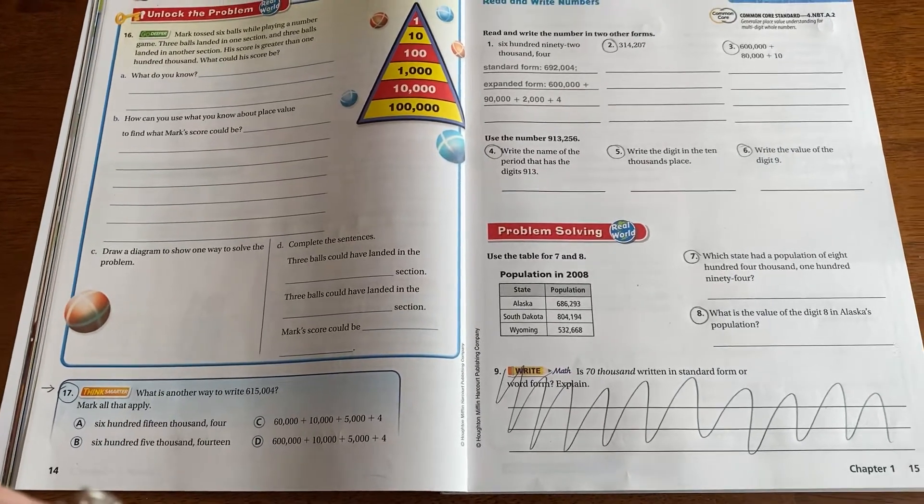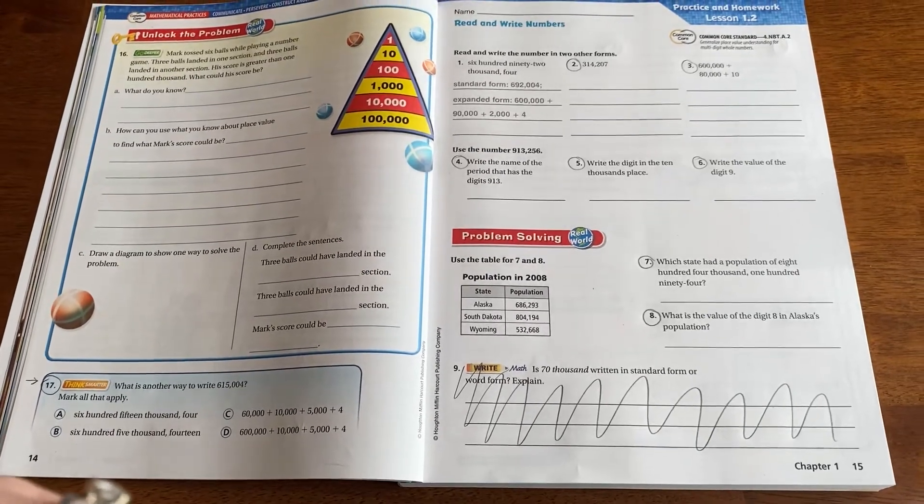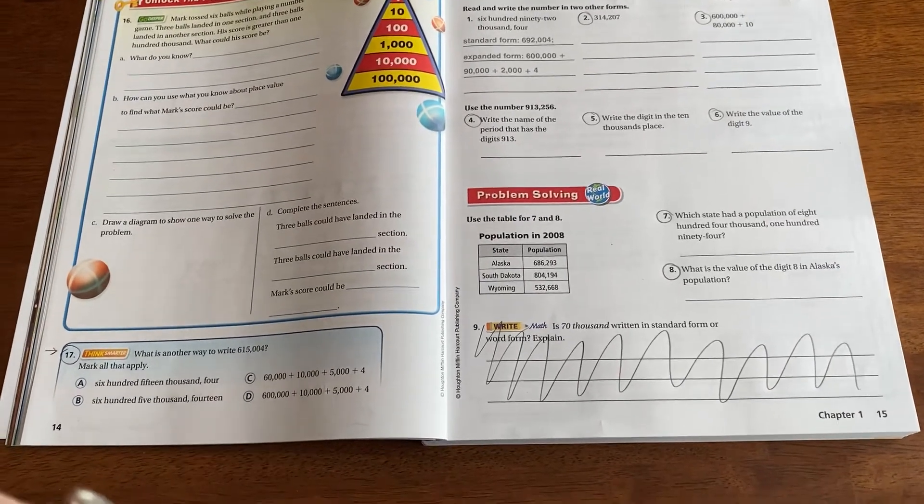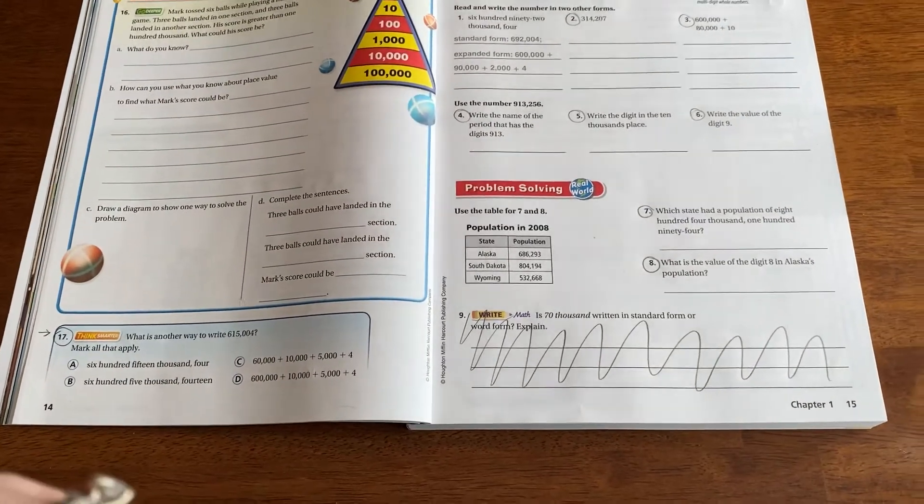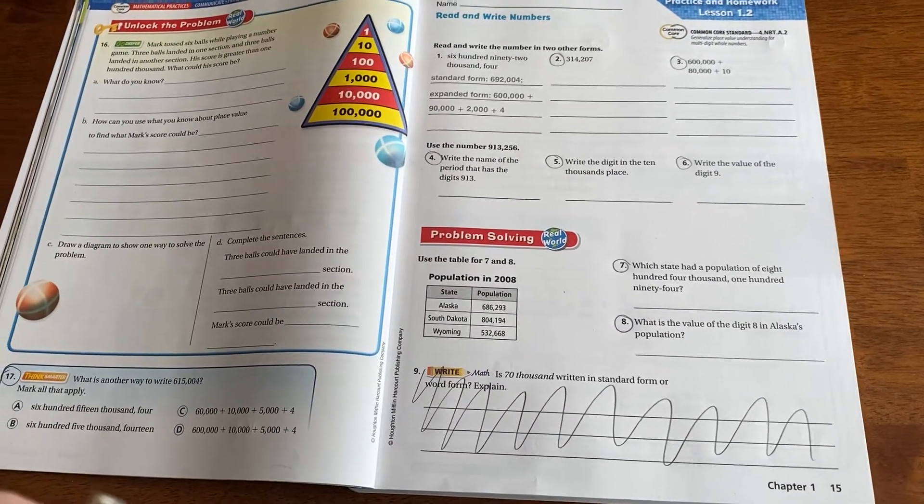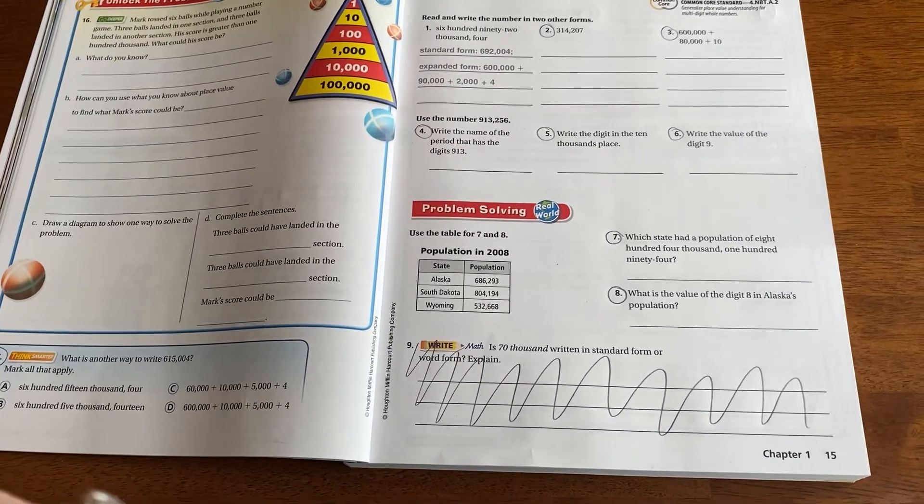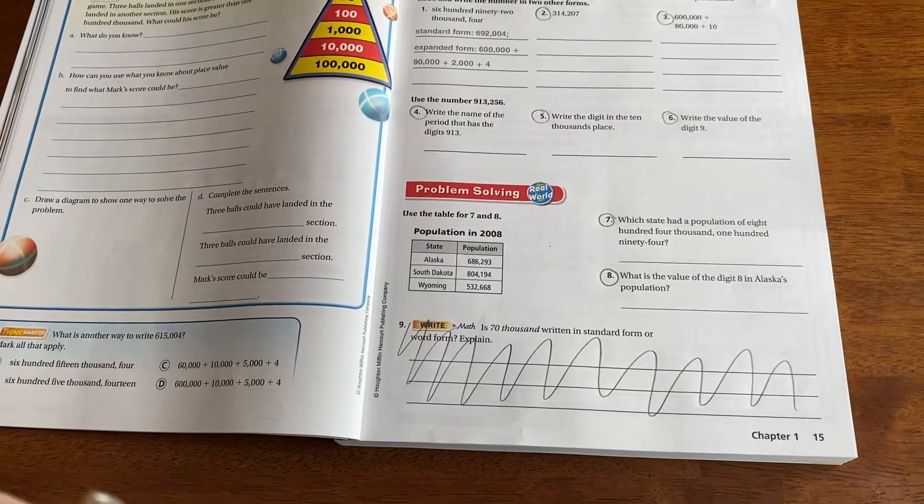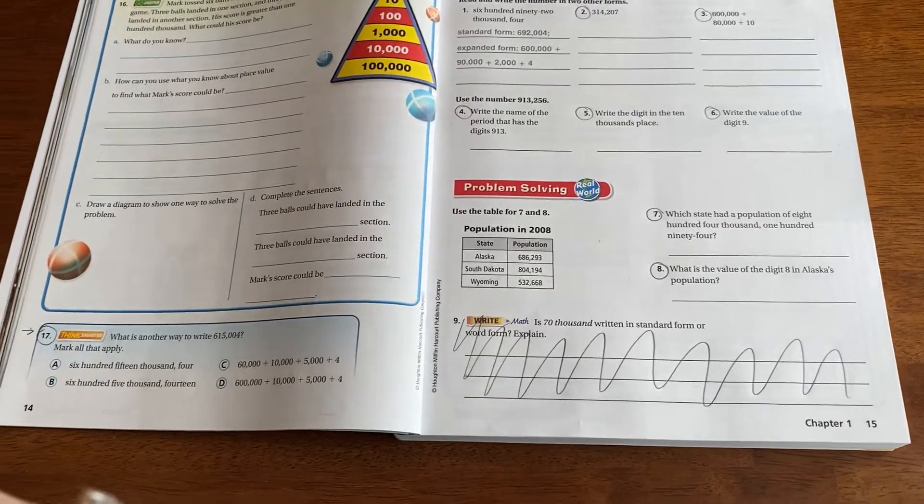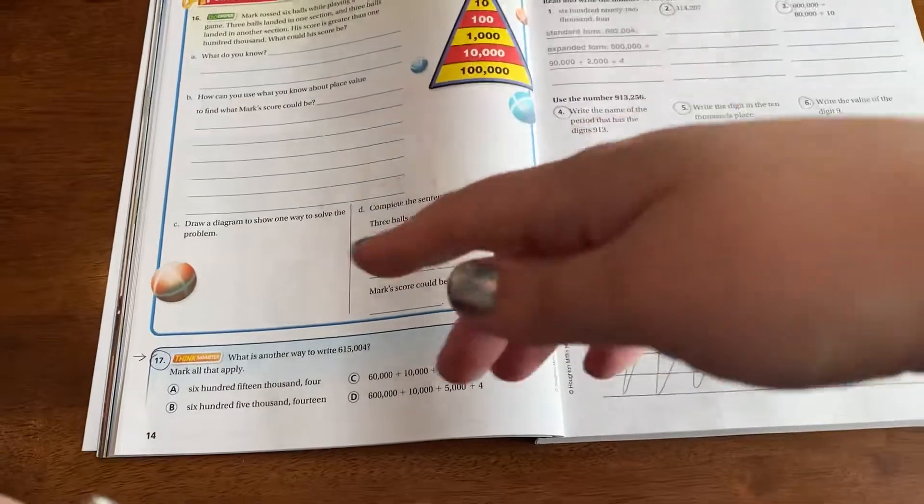Hey, fourth grade, it's Mrs. Spears. Coming at you today from page 14 and 15. This is your homework video for Tuesday, September 15th. This goes over the same section we talked about in the last video and what we talked about in class today. We're spending a couple days on this. This is lesson 1.2, reading and writing numbers. We're talking about standard form, word form, and expanded form, and how to kind of flip-flop back and forth between all of those. I'm starting on page 14 today.